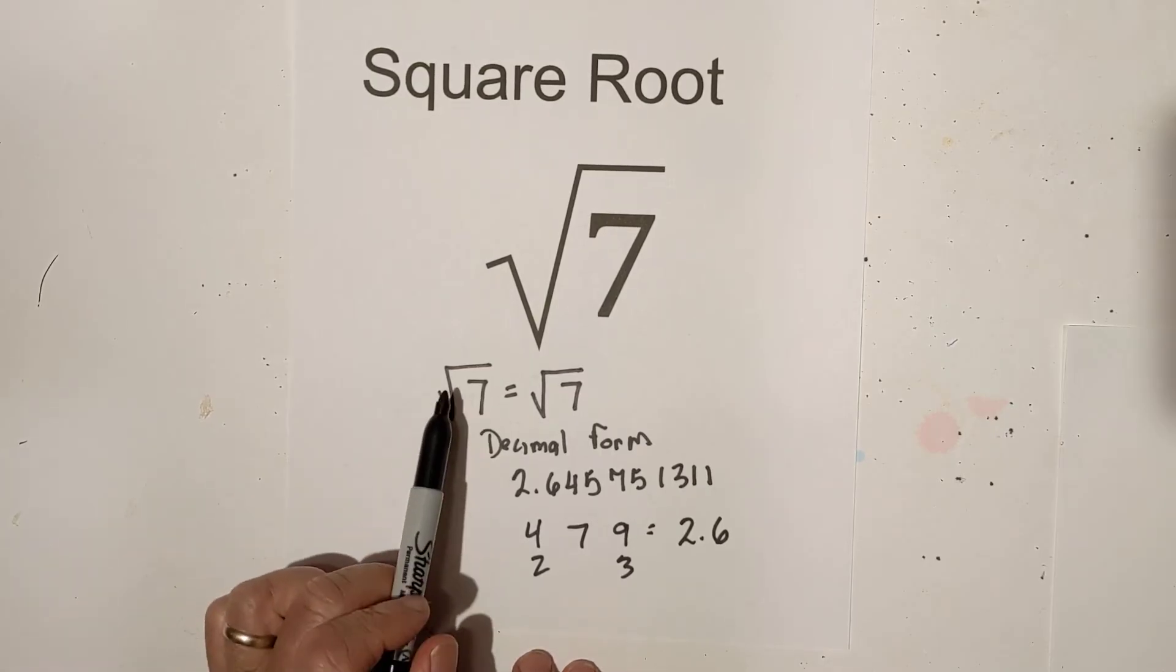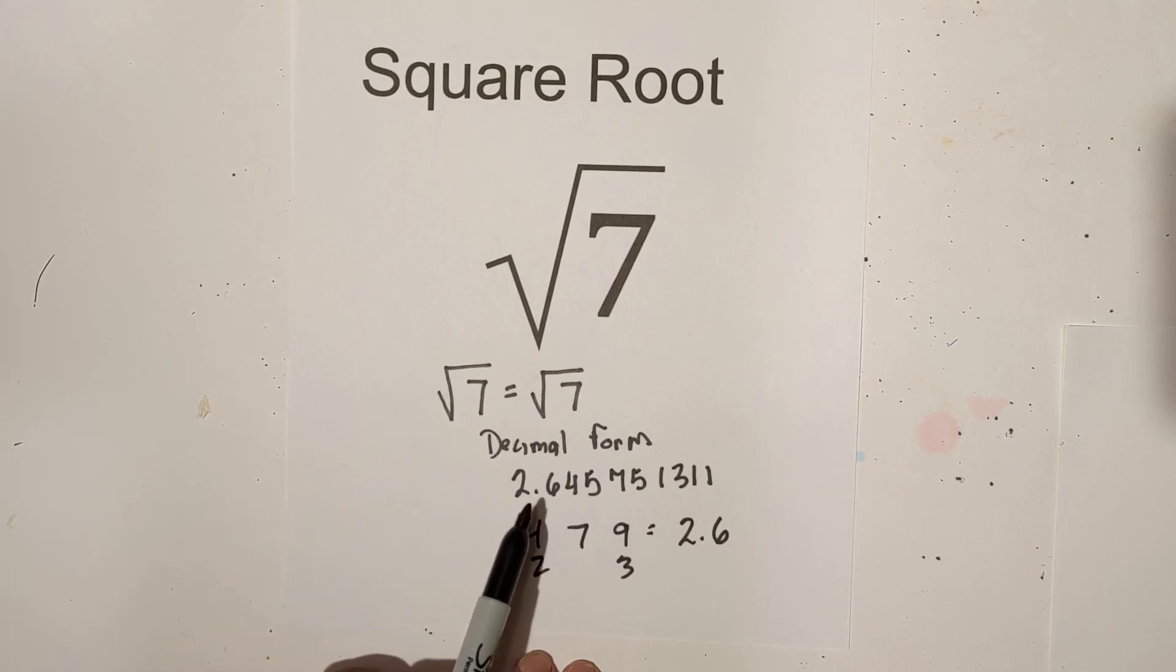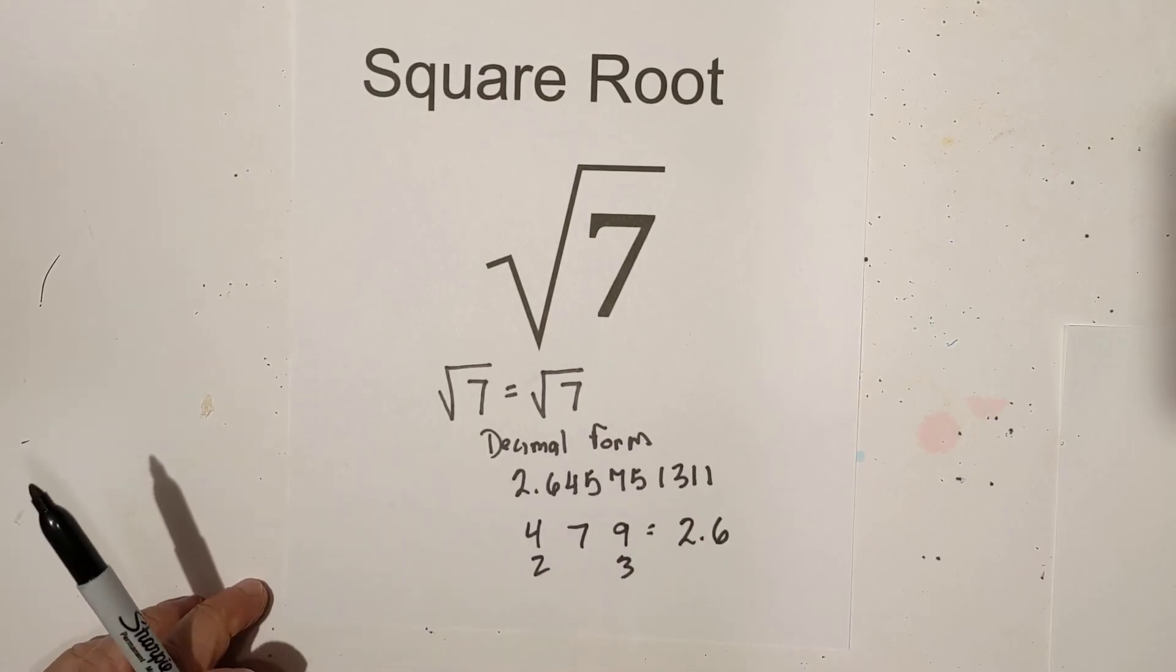So there we go. In summary, simplified, it is the square root of 7. Decimal form is right here, 2.645751311, and if you want to estimate it, there's how you do it.